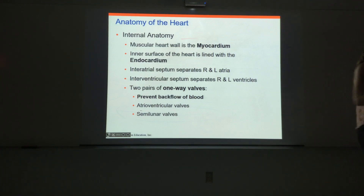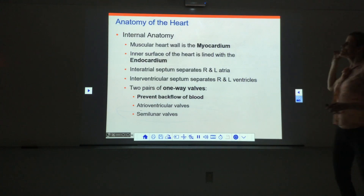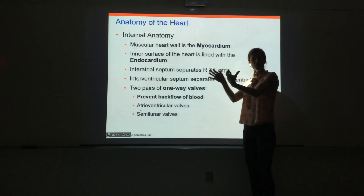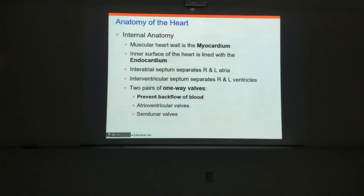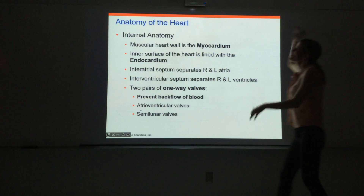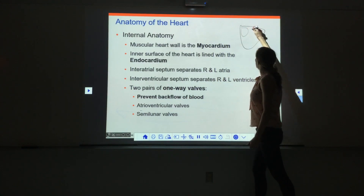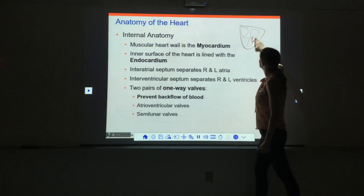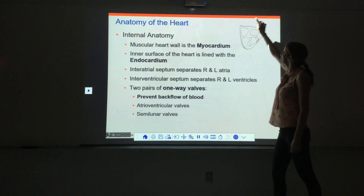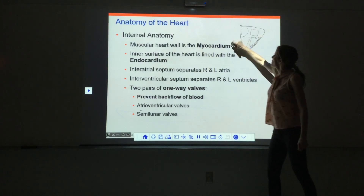We've looked at the outside of the heart and know about the superficial anatomy. Now we'll look at the internal anatomy — as if we sectioned or sliced the heart in half and looked inside. If we sliced the heart open, we can see the open spaces inside — those are our chambers: the right atrium and left atrium, the right ventricle and left ventricle. This thick wall of muscle that you see is called the myocardium.